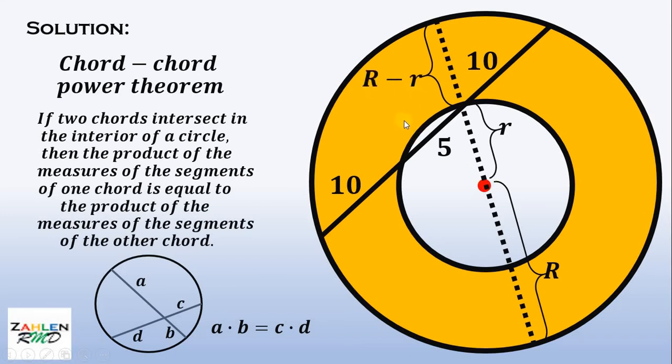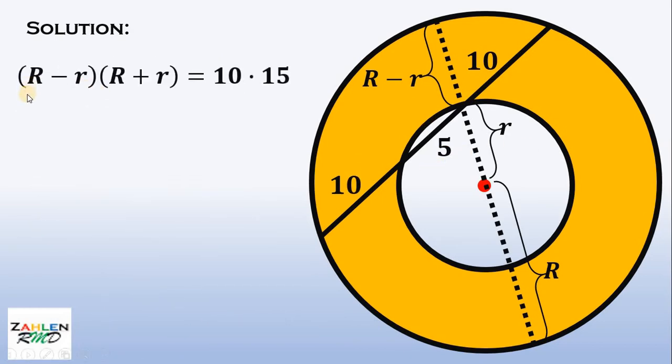At this point, we can now use chord-chord power theorem. We have capital R minus r multiplied by capital R plus r equals 10 multiplied by 10 plus 5, or 15. The left-hand side becomes capital R squared minus r squared equals 150.